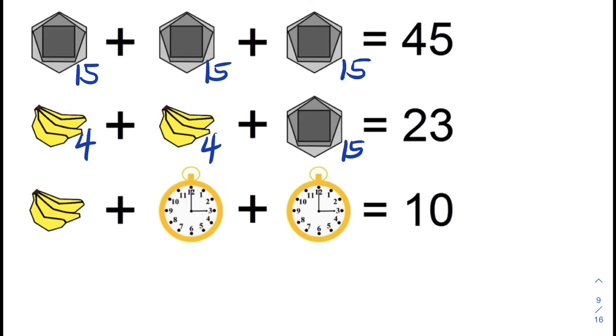Equation 3, a bunch of banana plus 3 o'clock plus 3 o'clock is equal to 10. We learned in the previous equation that a bunch of bananas with 4 bananas is worth 4. So to find the value of each clock, we subtract first 10 minus 4, which is 6.